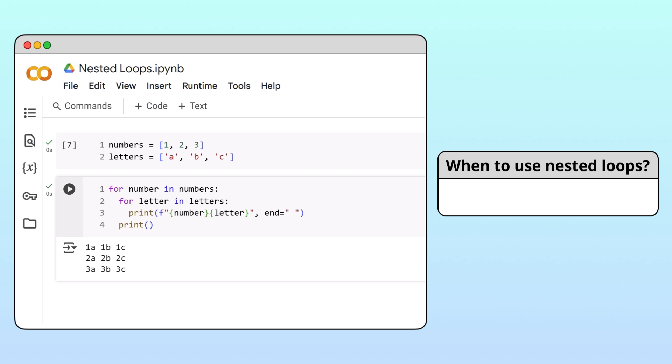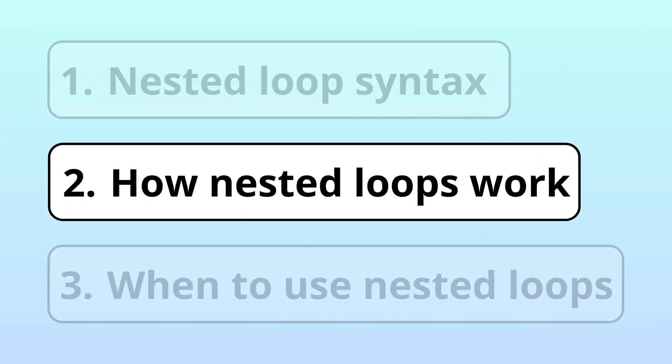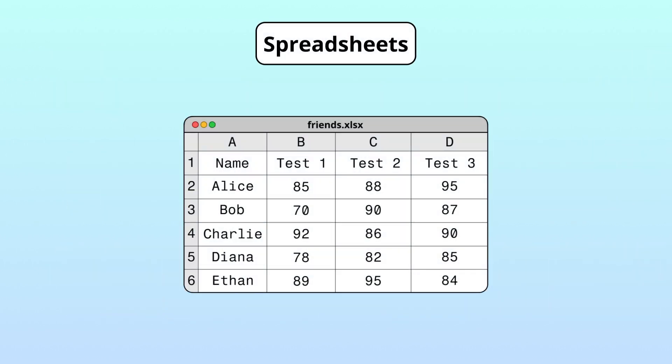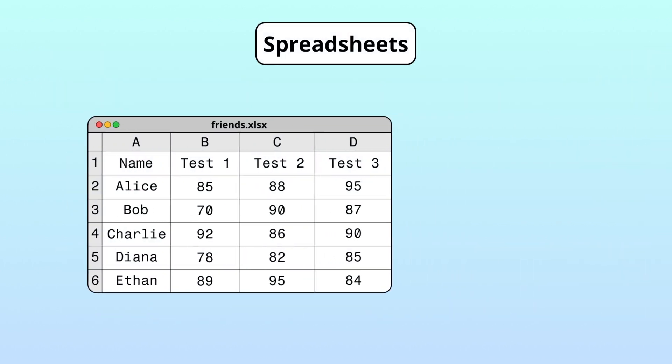Nested loops are incredibly useful when working with multidimensional data, like our numbers and letters grid here. For example, if you have student test score data in a spreadsheet, you can calculate each student's total test score using a nested loop.